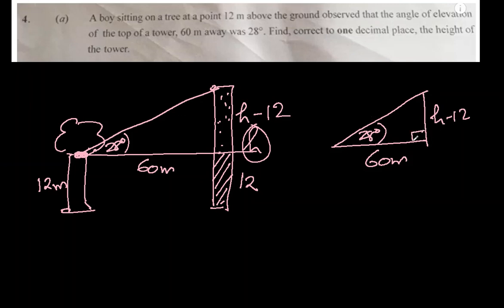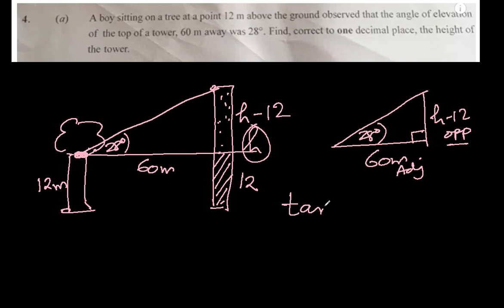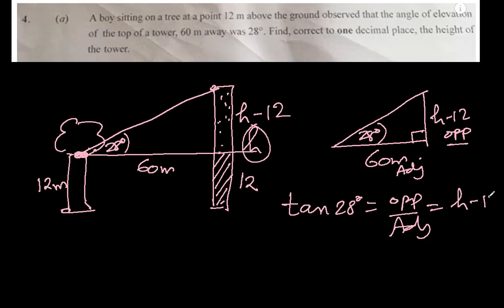Since this angle is confirmed to be 90 degrees, we can use trigonometry. This side is the opposite side of the angle, this side is adjacent to the angle, and the third is the hypotenuse — which is not needed right now. We use the ratio involving adjacent and opposite, which is tan. So we can write tan 28 degrees equals opposite over adjacent.